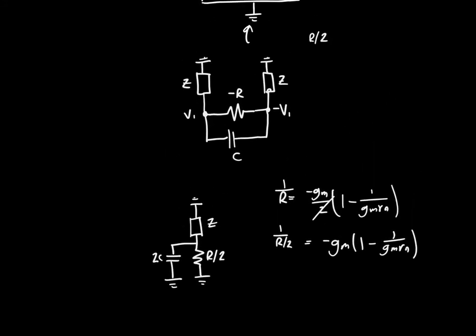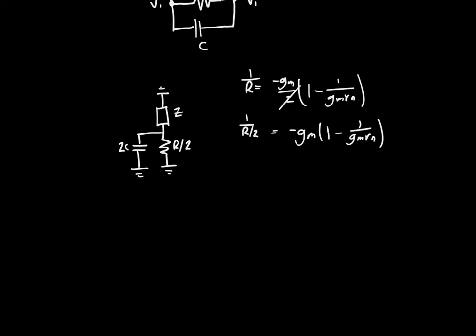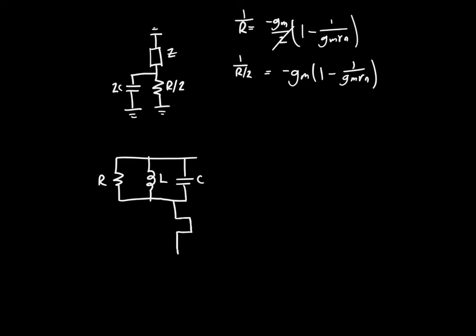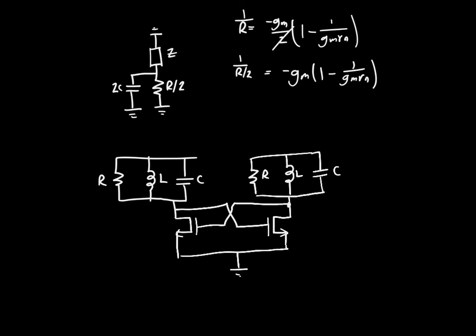If instead of doing these L over 2, R over 2, 2C, we just redraw the whole circuit with some resistance R, because now we get to choose the values of R, L, and C, so they don't need to be half of anything, they can just be values that we pick. And then we've got our cross-coupled pair, and another R, L, and C. These are just both NMOSs here, connected to ground, and then they are cross-coupled to each other.